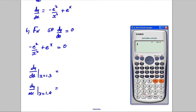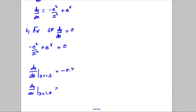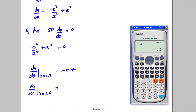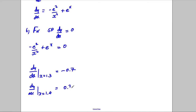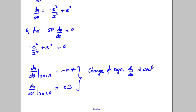Calculate it by entering the fraction negative e squared divided by x squared, add e to the power of x. At x equals 1.3, I get negative 0.7, and at x equals 1.4, I get 0.3. Therefore there is a change of sign, dy/dx is continuous, and therefore there is a stationary point between 1.3 and 1.4.